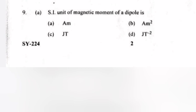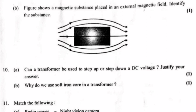Question 9 A: The SI unit of magnetic moment of a dipole is — A. Am², B. Am, C. JT⁻¹, D. JT⁻². Answer A: Am². Question 9 B: A figure shows a magnetic substance placed in an external magnetic field. Identify the substance. Answer: Diamagnetic.